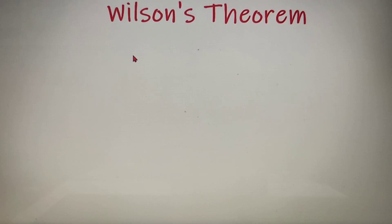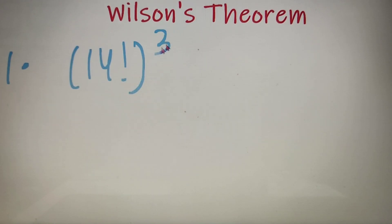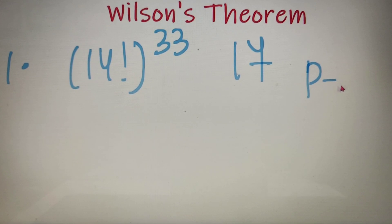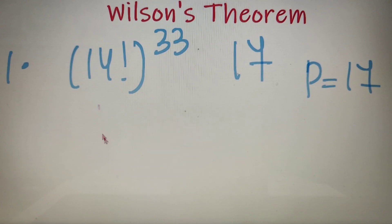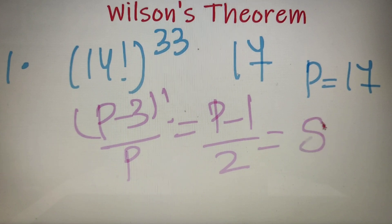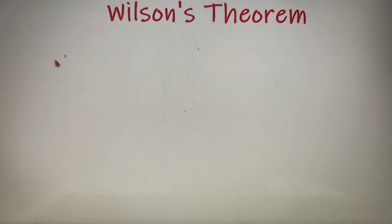Now let's take an example to make the concept clearer. We have to find the remainder when 14 factorial to the power 33 is divided by 17. First, I check whether Wilson's theorem applies — since 17 is prime, it does. Here p equals 17, and 14 equals p minus 3. So applying the (p-3) factorial case, the remainder of 14 factorial divided by 17 is (p-1)/2 = 8. So we now need the remainder of 8 to the power 33 divided by 17.